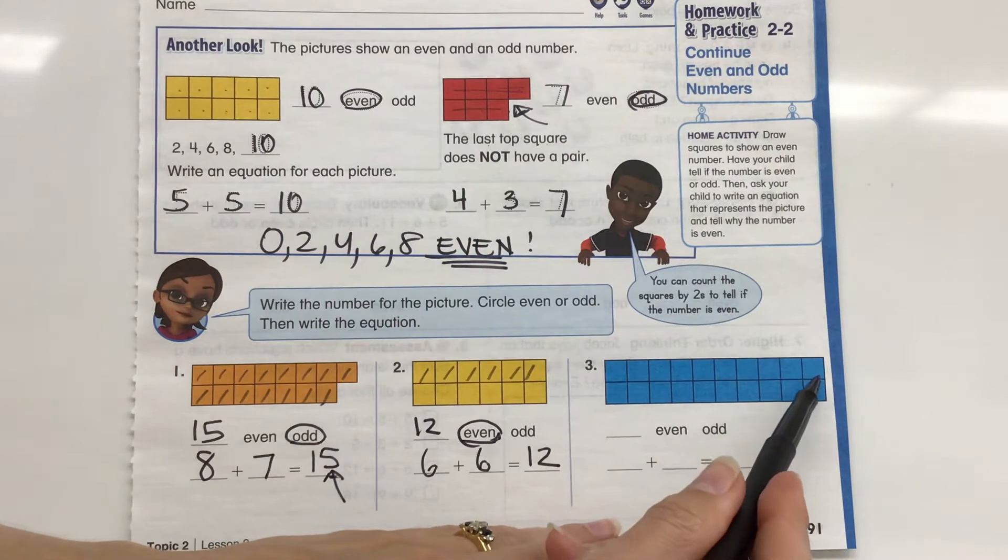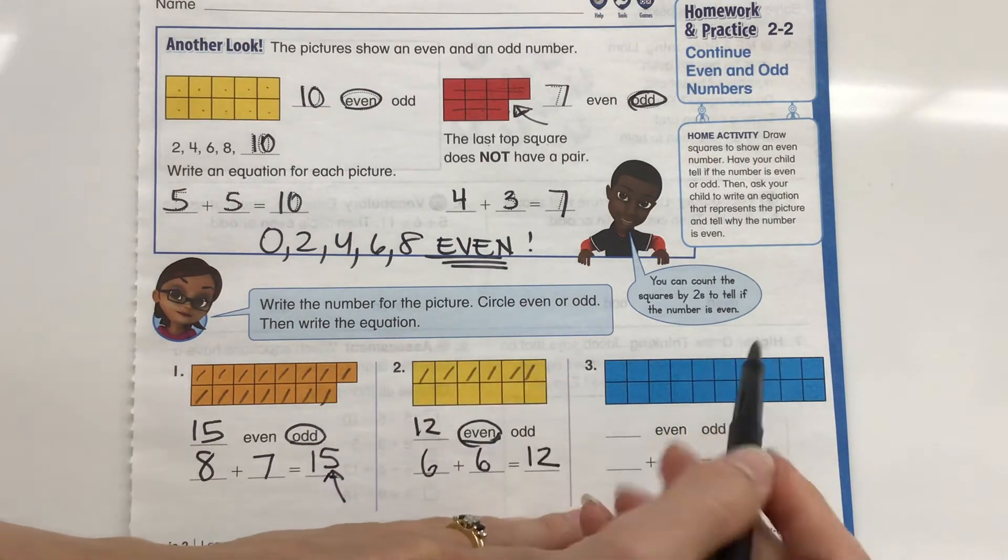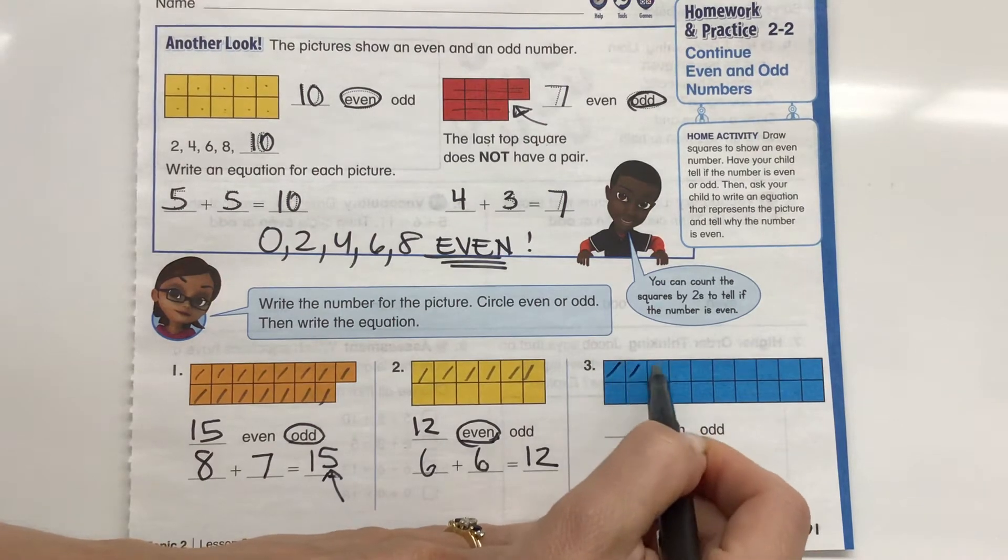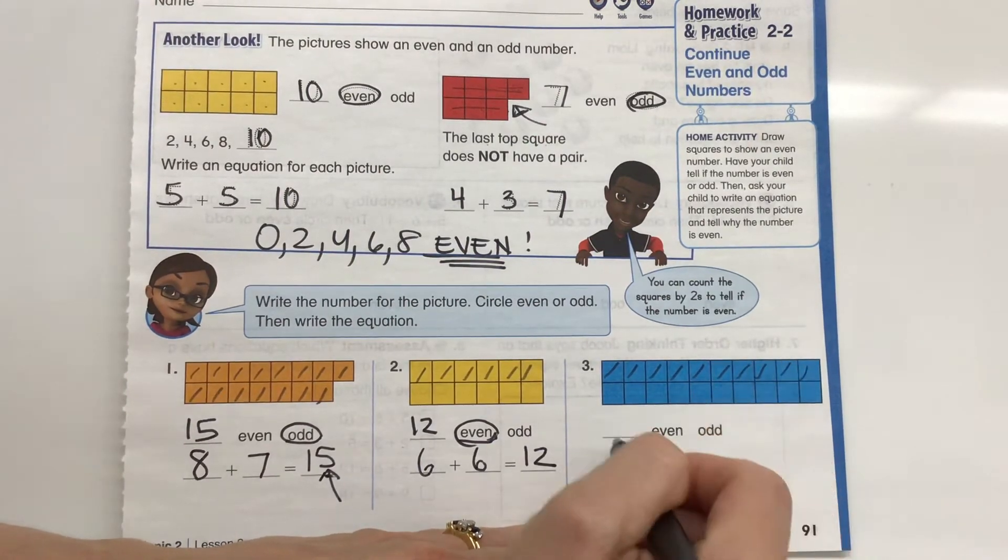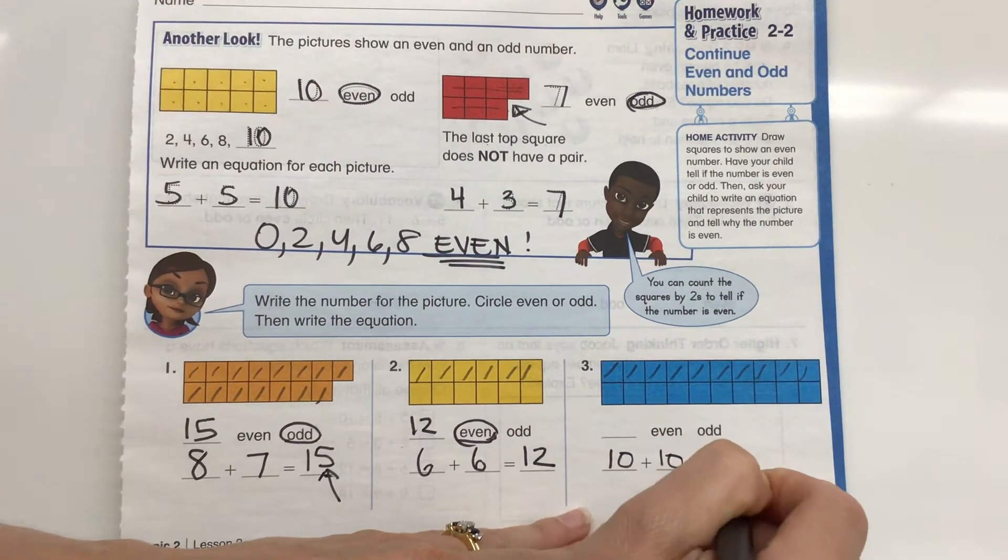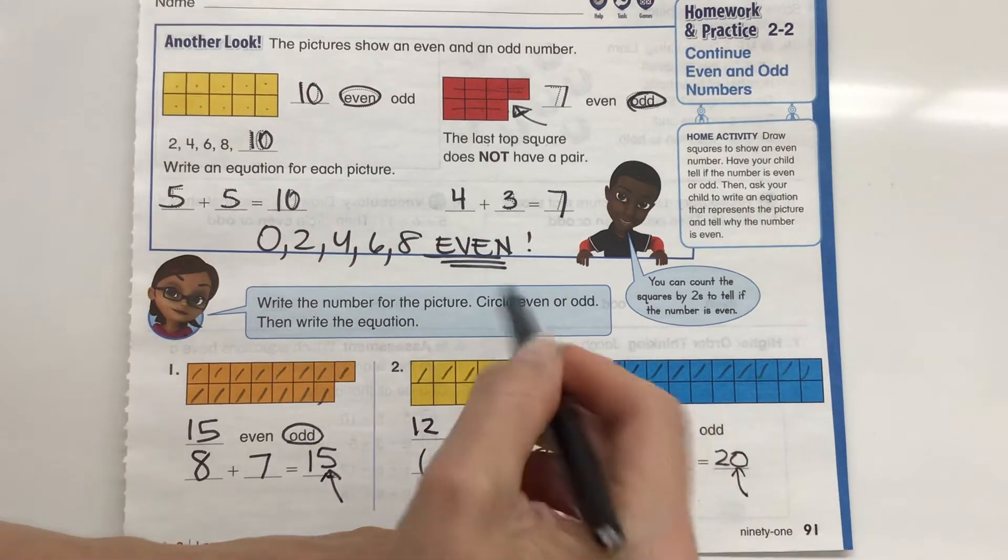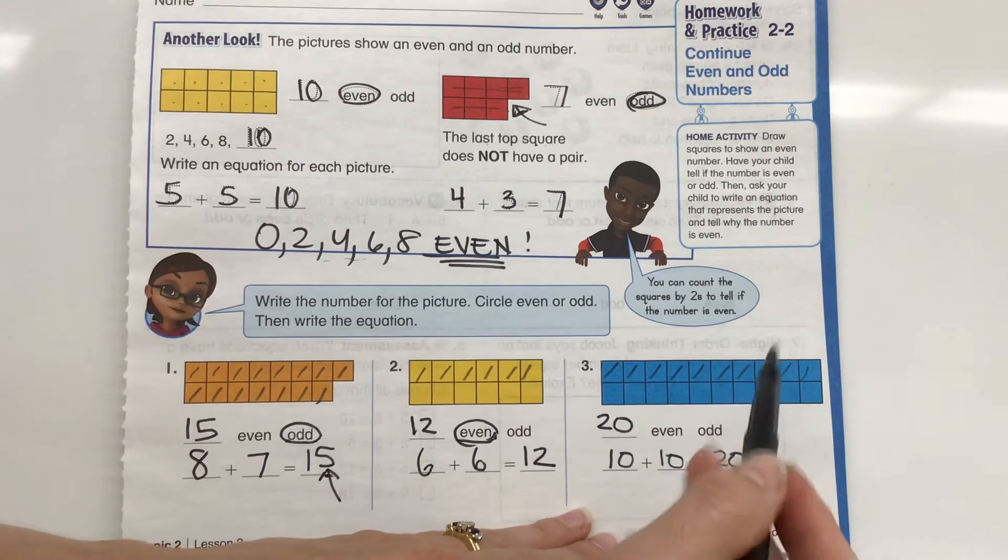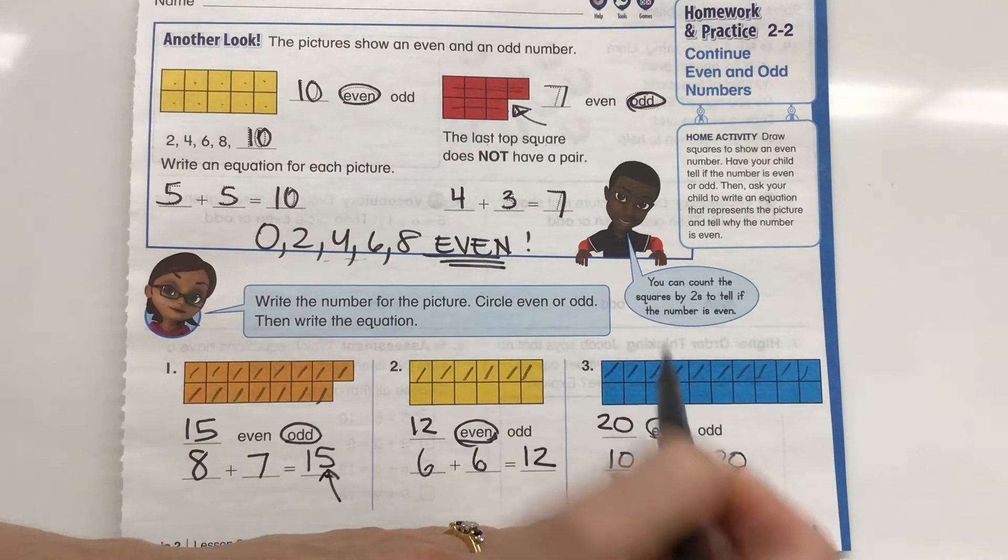All right. Holy cow. Just by looking at this, I can tell it's even because I'm not missing one like I did over here on number 1. So let's count this: 1, 2, 3, 4, 5, 6, 7, 8, 9, 10. So I have 10 plus 10 gives me a sum of 20. And 20 has a 0 on the end. 0, 2, 4, 6, 8. Who do we appreciate? Even numbers. So we know that's going to be even.